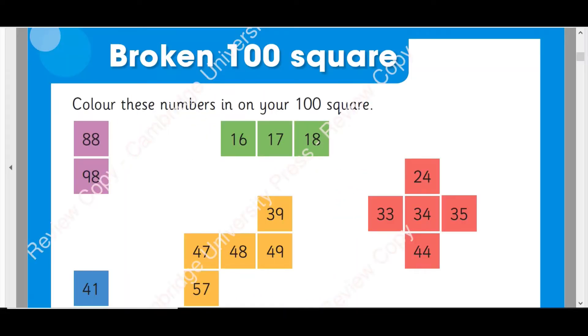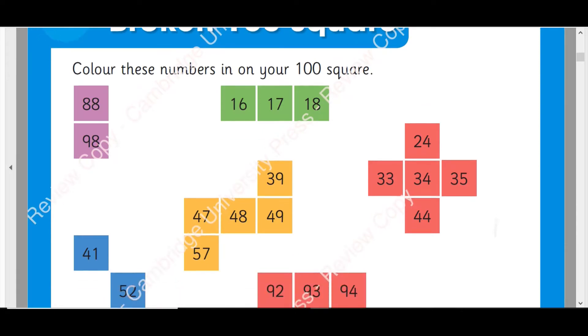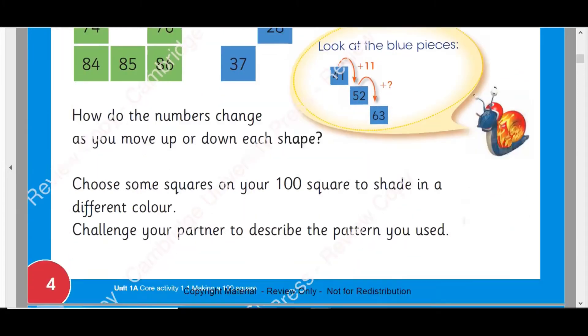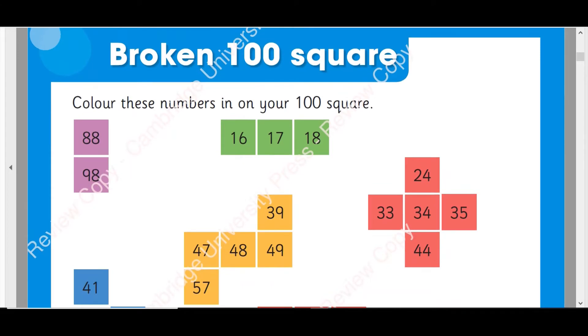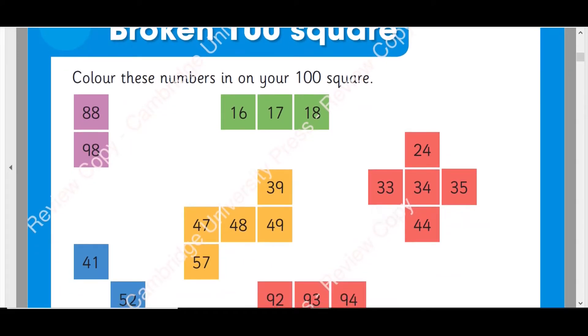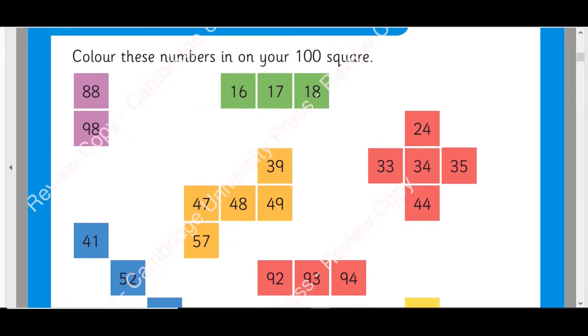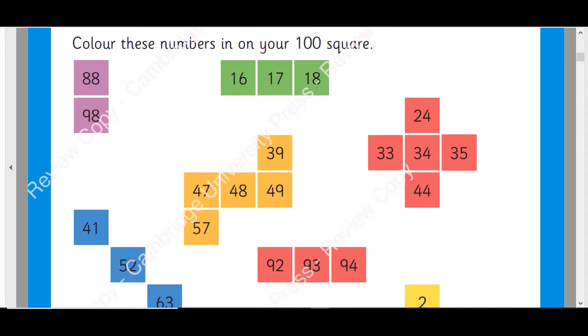This is page number 4 of Learner's Book and you can see the page. It says broken 100 square. Color these numbers in on your 100 square. So which 100 square are they talking about?